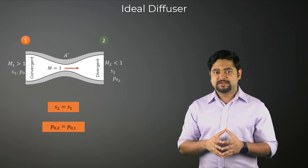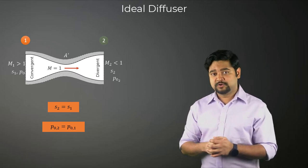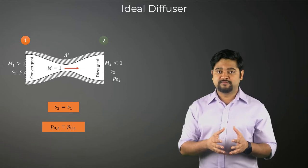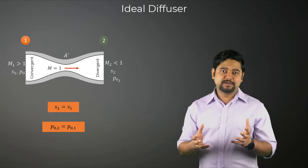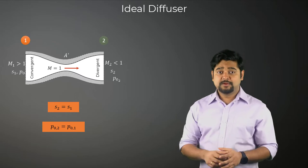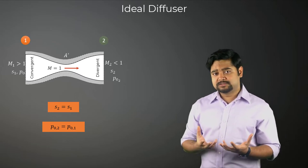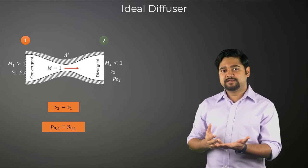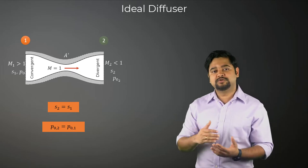However, the flow will inherently generate oblique shocks in the converging portion of the diffuser as the flow is being turned into itself. Moreover, as the flow is viscous, there will be an entropy increase within the boundary layers on the walls of the diffuser.